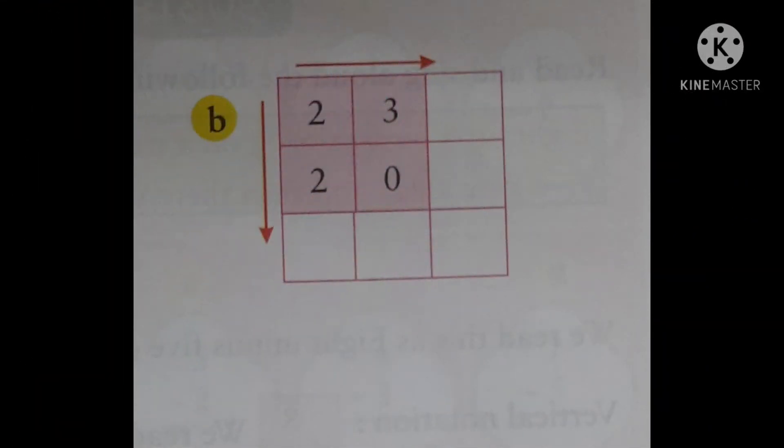2 plus 3, 2 plus 0. This side 2 plus 2, 3 plus 0. Now, find out the answer.